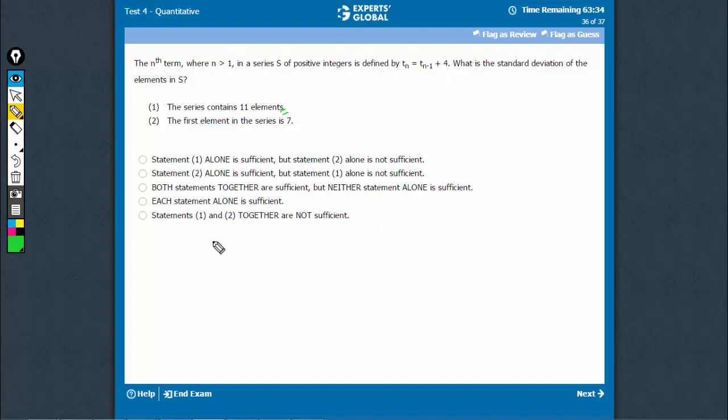So, what matters is, suppose the first term is 5, the other terms are going to be 9, 13 and they're going to be 11 terms. You see, as long as the gap is known and the number of terms is known,